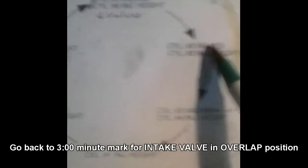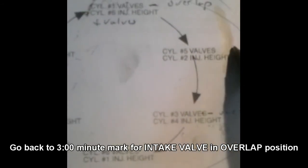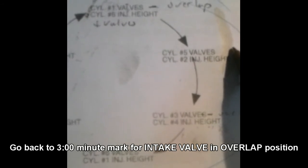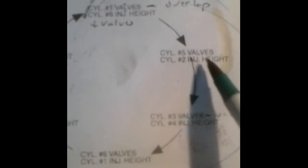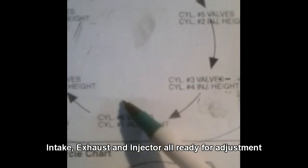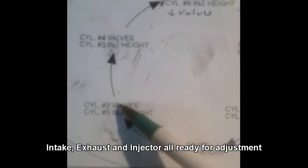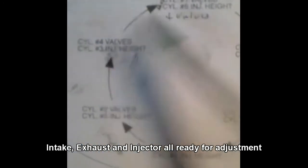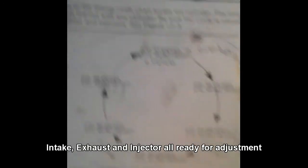And then it would rotate. So cylinder number five, once you set the valve overlap, intake valve overlap, then you would do the injector and intake and exhaust valves on cylinder number two. And then three and four, six and one, two and five, four and three, and so on. And here's why.